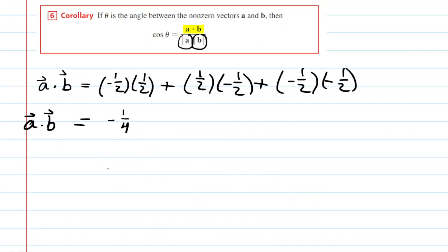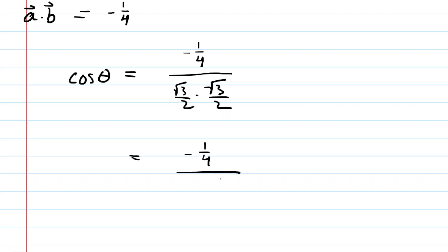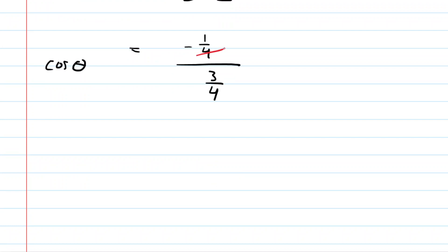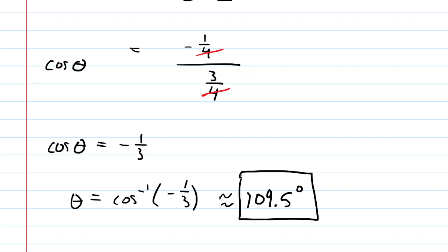Now we can plug into the equation. The cosine of theta equals the dot product (−1/4) divided by the magnitude of vector A (√3/2) times the magnitude of vector B (√3/2). Multiplying the denominators gives 3/4. Dividing the fractions, the denominators cancel beautifully, giving cosine of theta equal to negative 1/3. Finally, theta equals the inverse cosine of negative 1/3. With the calculator in degree mode, this gives approximately 109.5 degrees — the H–C–H bond angle in a methane molecule.